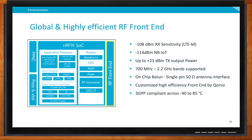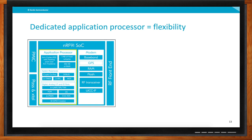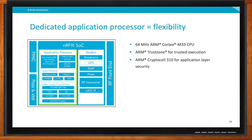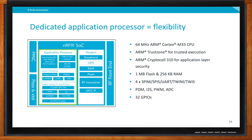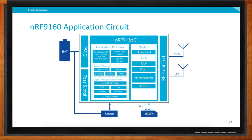For the application processor, it's built around a Cortex-M33 CPU, a very standard system architecture for embedded applications today. It also supports TrustZone so you can build secure applications that need trusted execution. We also included an ARM CryptoCell 310 for encryption, decryption, and random number generation, which is needed for secure applications and connectivity. One megabyte of flash and 256 kilobytes of SRAM is a good memory size for embedded applications. In addition, we have standard communication interfaces, GPIOs, ADCs, and analog functionality.